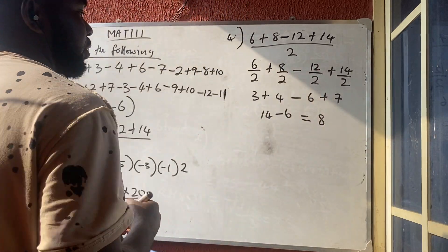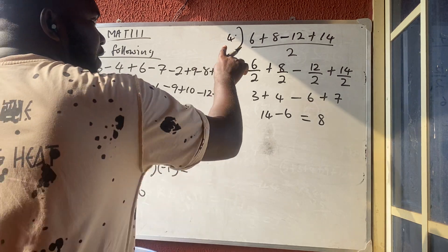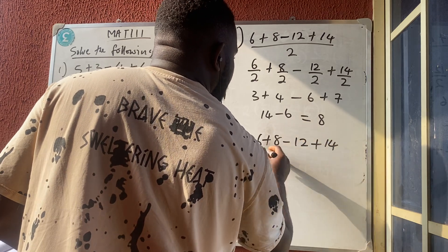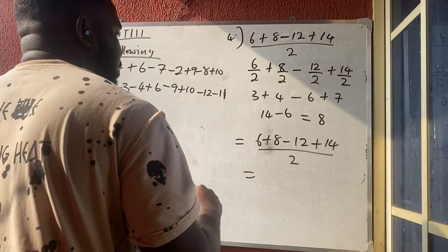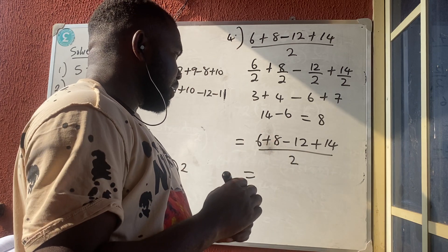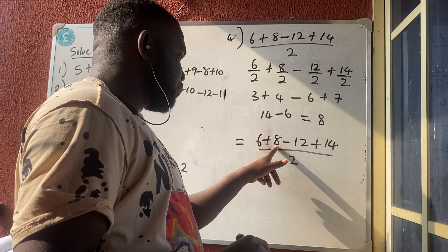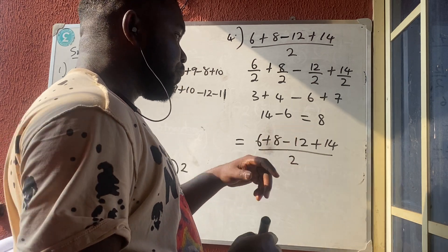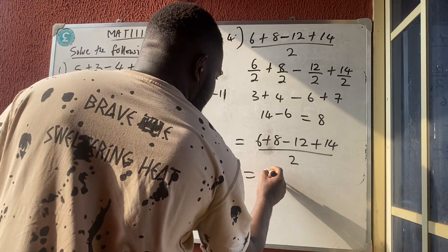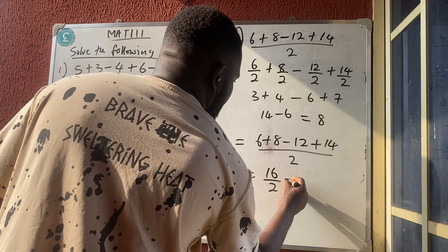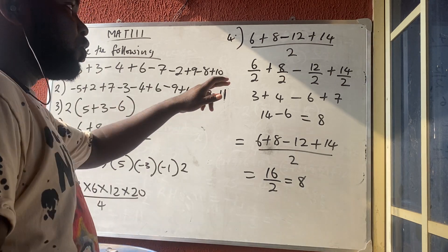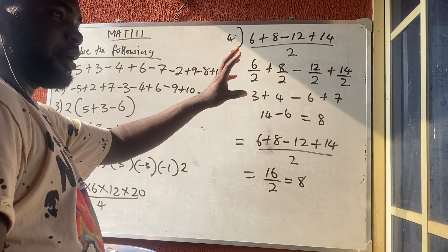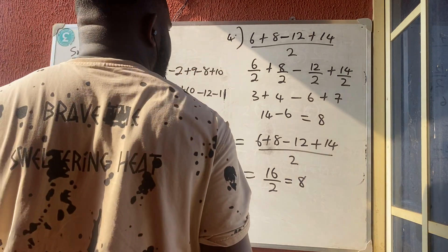Adding the positives: three plus four plus seven is fourteen. Then fourteen minus six gives eight. You can verify by adding directly: six plus eight gives fourteen, fourteen minus twelve is two, two plus fourteen is sixteen, and sixteen divided by two is eight — same answer. We use the separation method only when the numerator terms cannot be added.